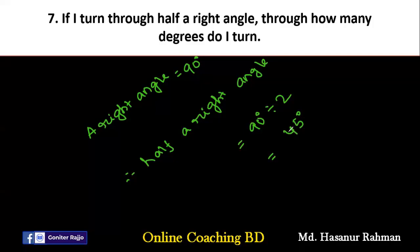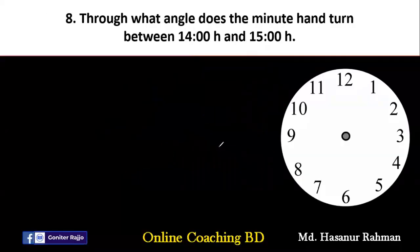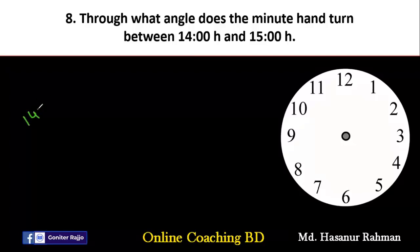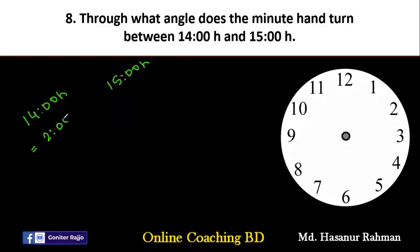So if I turn through half a right angle, 45 degrees will be created. Number eight says: through what angle does the minute hand turn between 14 hours and 15 hours? We know that 14 hours is equal to 2 o'clock, and 15 hours means 3 o'clock. So we need to find the angle the minute hand turns from 2 to 3.